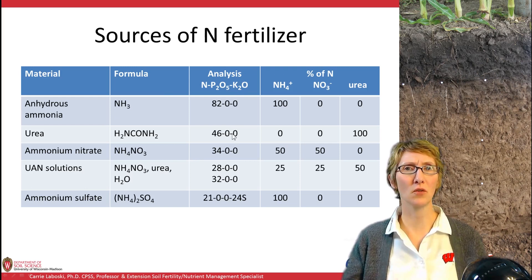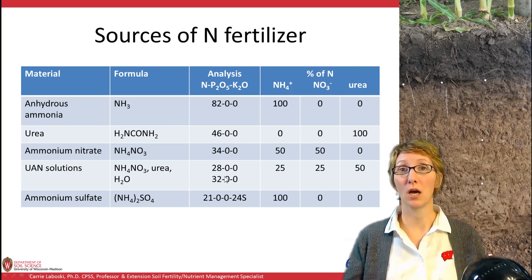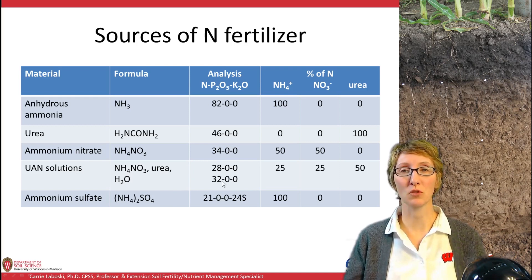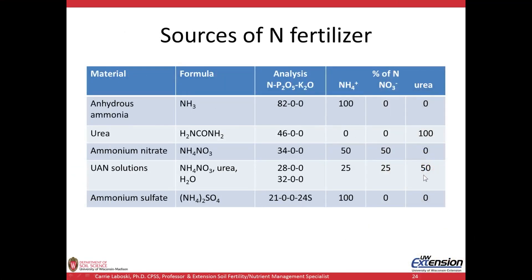It's important to know the analysis of these materials. Some have higher analysis than other materials, and with UAN solutions it's important to pay attention to whether you're going to be using 28% or 32% N. We can see both products here in Wisconsin. This is showing the percentage of nitrogen in each form.